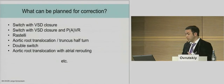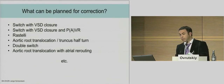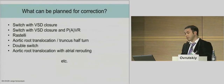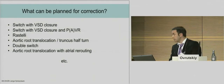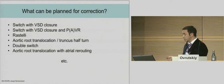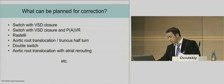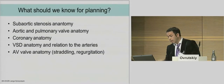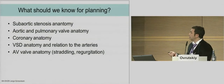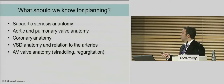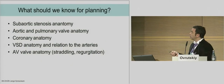We should know what can be planned for correction nowadays, and then proceed with our diagnostics. Different possibilities were discussed today. What should we know for planning? These topics are important: subaortic anatomy, aortic and pulmonary valve anatomy, conus anatomy, VSD, and arterial valve anatomy.